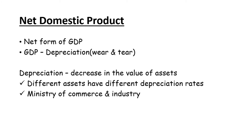Next is Net Domestic Product. Its definition is simple: NDP equals GDP minus depreciation. Depreciation here means the decrease in the value of assets. Every asset's value automatically decreases after a certain period. For example, if you purchase a bike for one lakh rupees and use it for 3 years, after that the bike's value reduces. That reduction in value is called depreciation.